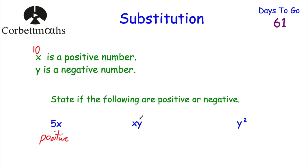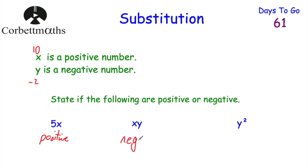Next, is XY positive or negative? XY means X multiplied by Y. X is positive — say 10 — and Y is negative — say negative 2. A positive times a negative is a negative, so for example 10 multiplied by negative 2 is negative 20. So XY is always negative.